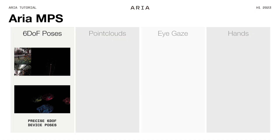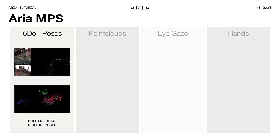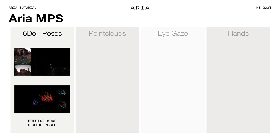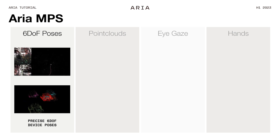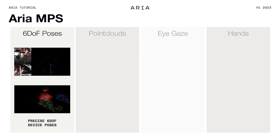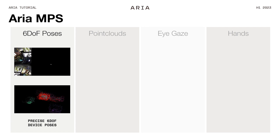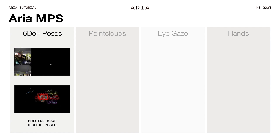So what are those capabilities? The first one, super important, is 6DoF poses — localization of the device in space. That is really what powers 3D machine perception. The first thing we offer is, for a single recording, localizing it in a consistent coordinate frame.